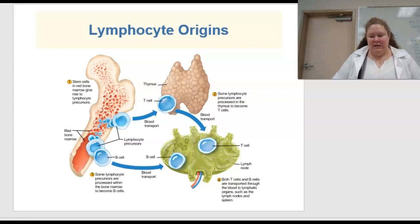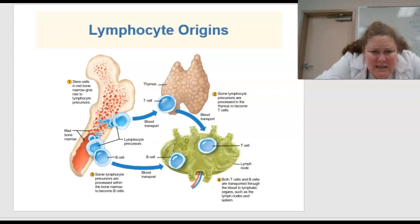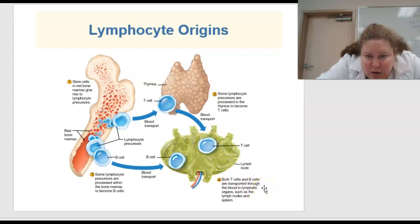When we talk about lymphocyte origins, the stem cells in the red bone marrow give rise to the lymphocyte precursor. Some lymphocyte precursors are processed in the thymus to become T cells. Some are processed within the bone marrow to become B cells. Both B cells and T cells are then transported through the blood to the lymphatic organs, such as the lymph nodes and the spleen.